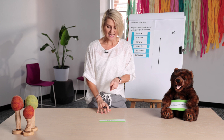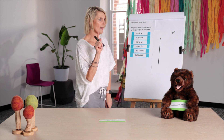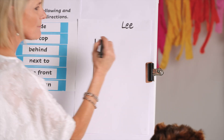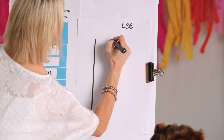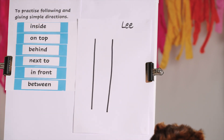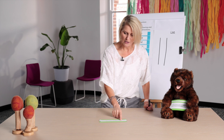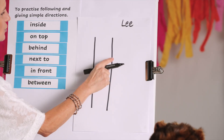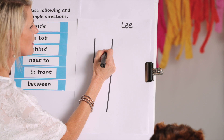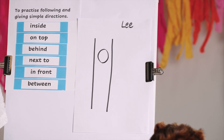Number two: put another line next to the line. Make it exactly the same. Another line next to this line and make it almost exactly the same. How are you going at home? Number three: draw a circular shape inside the two lines. Circular shape inside the two lines. I'm pretty happy with that.